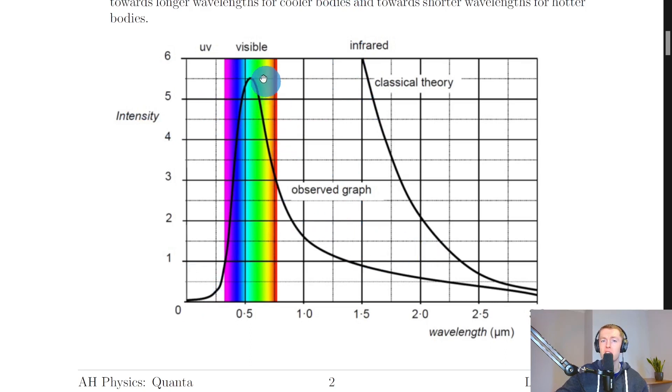This doesn't agree with what is observed because as we go towards higher frequencies or lower wavelengths, the intensity of the radiation emitted drops off. This idea of their classical equation not giving the expected blackbody radiation curve was known as the ultraviolet catastrophe, because their curve clearly fails in the ultraviolet region of the spectrum.